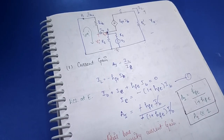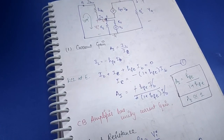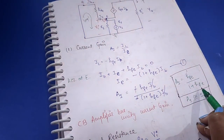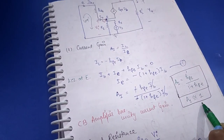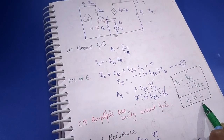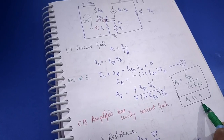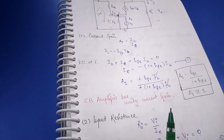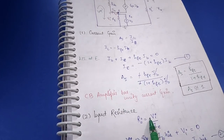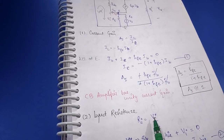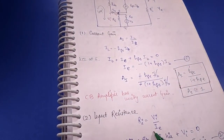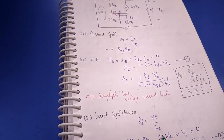From this we can conclude that the common base amplifier has unity current gain, because this value is approximately equal to 1. This is a main advantage of the common base configuration. Now let's calculate the input resistance, which is the ratio of input voltage to input current — input voltage VI to emitter current IE.